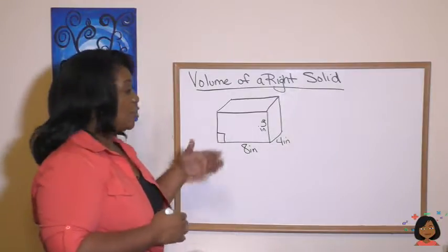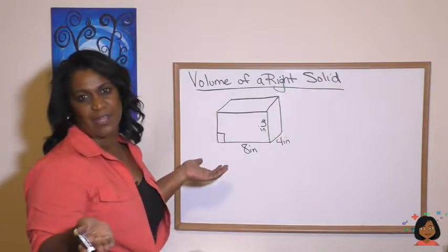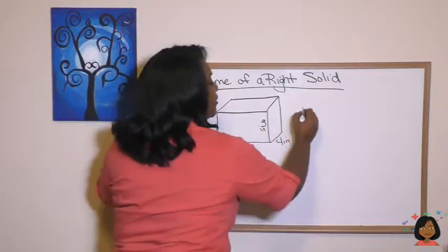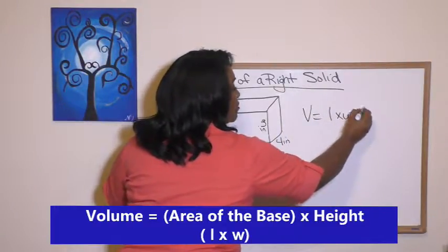So the volume, you know, pretty much we've learned the volume of a rectangular prism, right? We'd call it volume equals length times width times height.